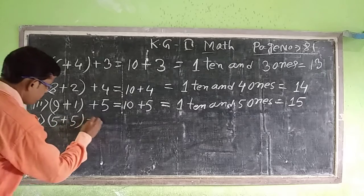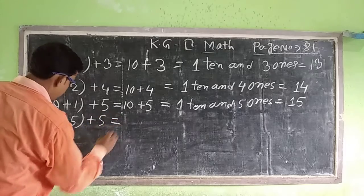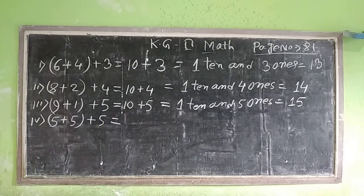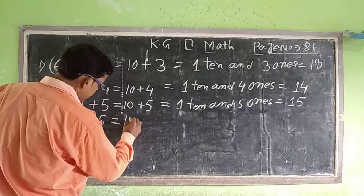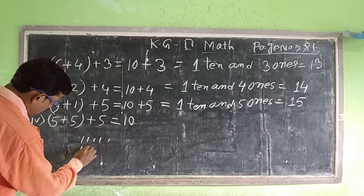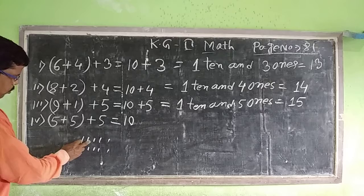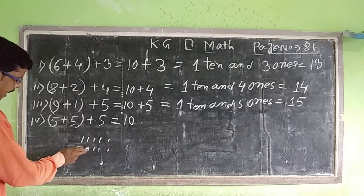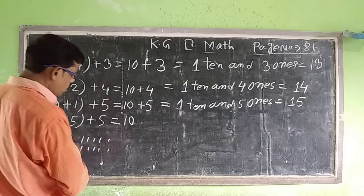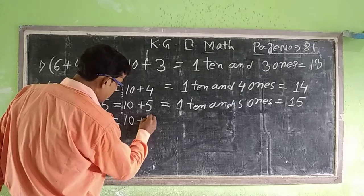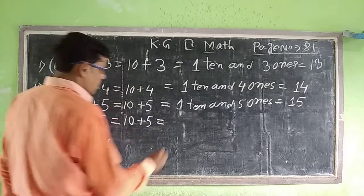Question number 4: 5 plus 5 plus 5. 5 plus 5 is equal to 10. Counting: 1, 2, 3, 4, 5; 1, 2, 3, 4, 5; 1, 2, 3, 4, 5, 6, 7, 8, 9, 10. 5 plus 5 is equal to 10. 10 plus 5.